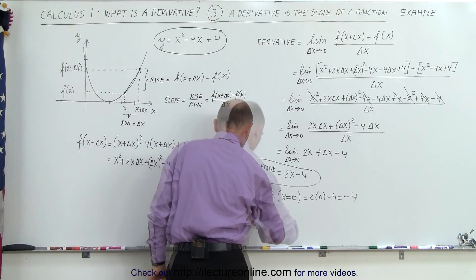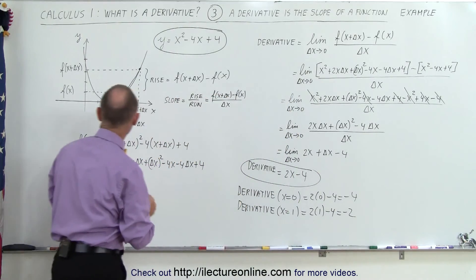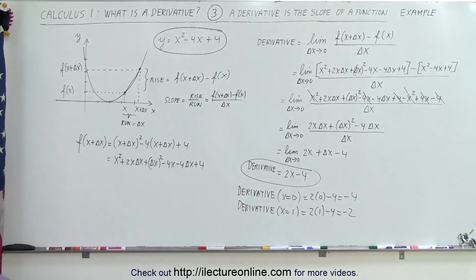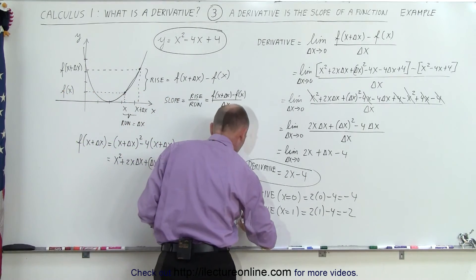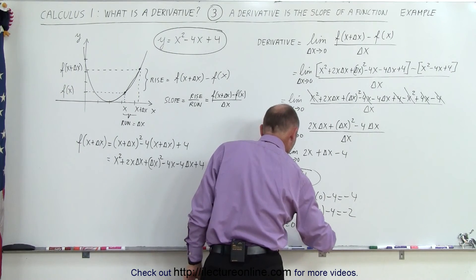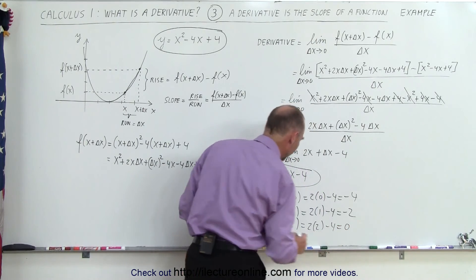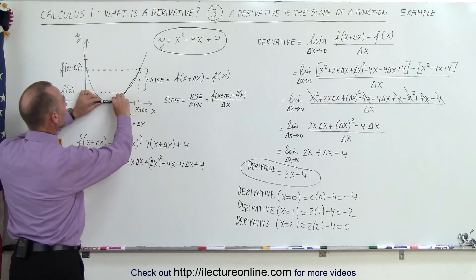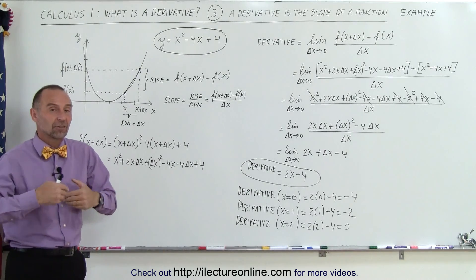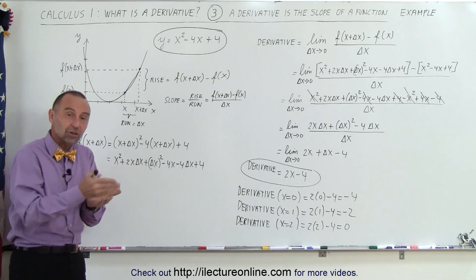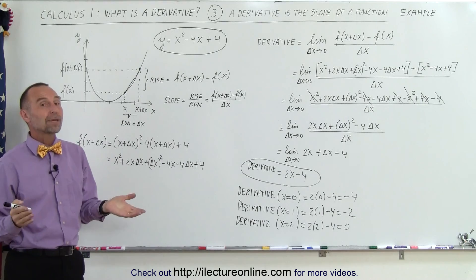When x equals 1, the derivative is 2 times 1 minus 4, which is negative 2. So when x equals 1, the slope is negative 2. When x equals 2, the derivative is 2 times 2 minus 4, which is zero. And you can see that when x equals 2, the slope equals zero. So the derivative is the slope of a function, but if the function is non-linear, the derivative will be a function in itself, and we plug in values for x to find the slope at any particular point. And that's what we mean by a derivative.